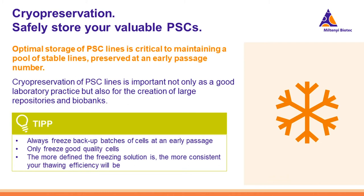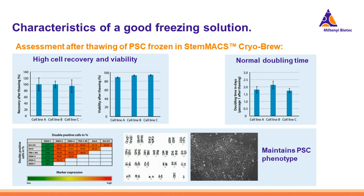Cryopreservation is not only important as a good laboratory practice, but also for the creation of larger repositories and biobanks. Always freeze backup batches at an early passage, always freeze only good quality cells, and the more defined the freezing solution, the more consistent your thawing efficiency will be. When using a defined freezing solution, we can expect consistent performance of PSC cultures after thawing. Here you may see an assessment of cell recovery and viability of PSC lines originally frozen in StemMACS CryoBrew freezing solution.